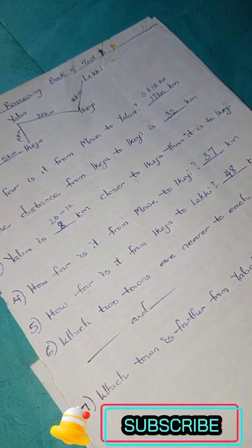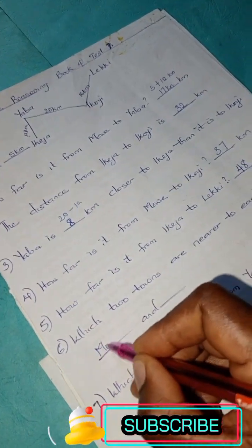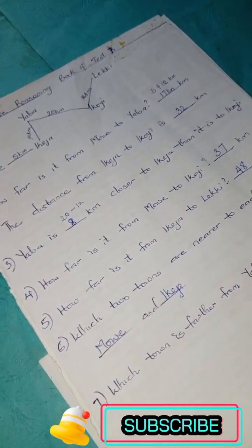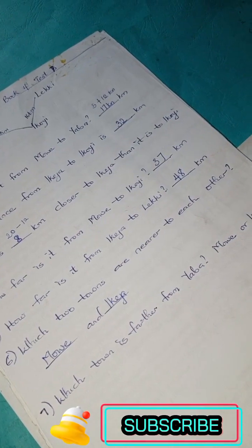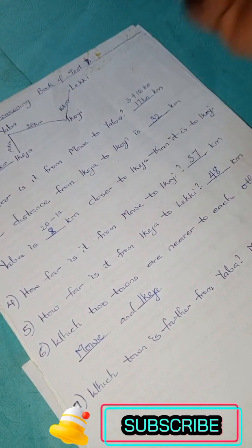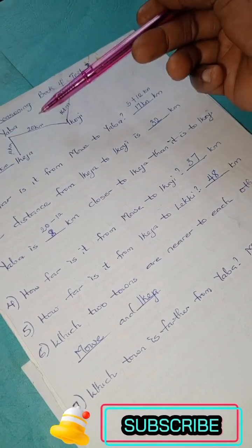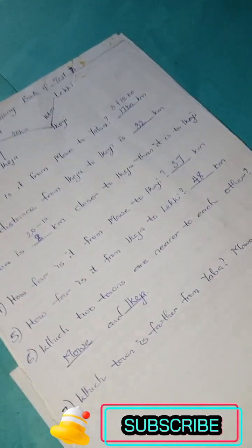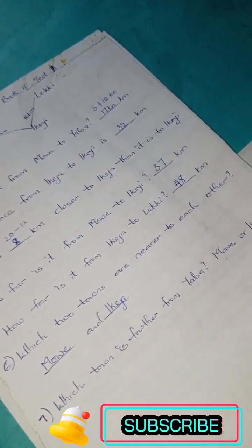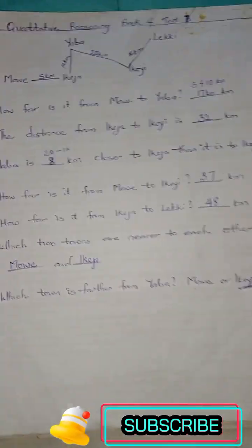Number six: which two towns are nearer to each other? This is actually the closest. We have Mui and Ikeja, closer by 5 kilometers. Which town is farther from Yaba, Mui or Ikoyi? From Mui to Yaba is 17 kilometers, and from Ikoyi to Yaba you have 20 kilometers. So Ikoyi is actually farther than Mui.